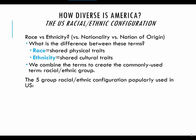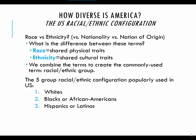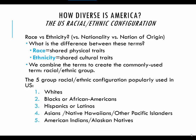In America, we have the five-group racial ethnic configuration — the classification most commonly used in the U.S.: whites; blacks or African Americans; Hispanics or Latinos; Asians, Native Hawaiians, and other Pacific Islanders; and then American Indians, Alaska Natives — also sometimes referred to as Native Americans, First Peoples, or Indigenous Americans, so several synonyms you can use there.